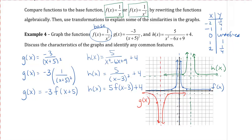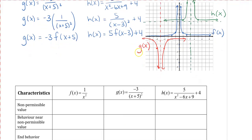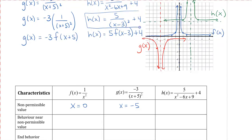Now we're going to take a look at the features of these three graphs. The non-permissible value for f(x): based on the denominator, the non-permissible value is x = 0. For g(x), the non-permissible value is x = −5, because substituting negative 5 into the denominator gives 0.